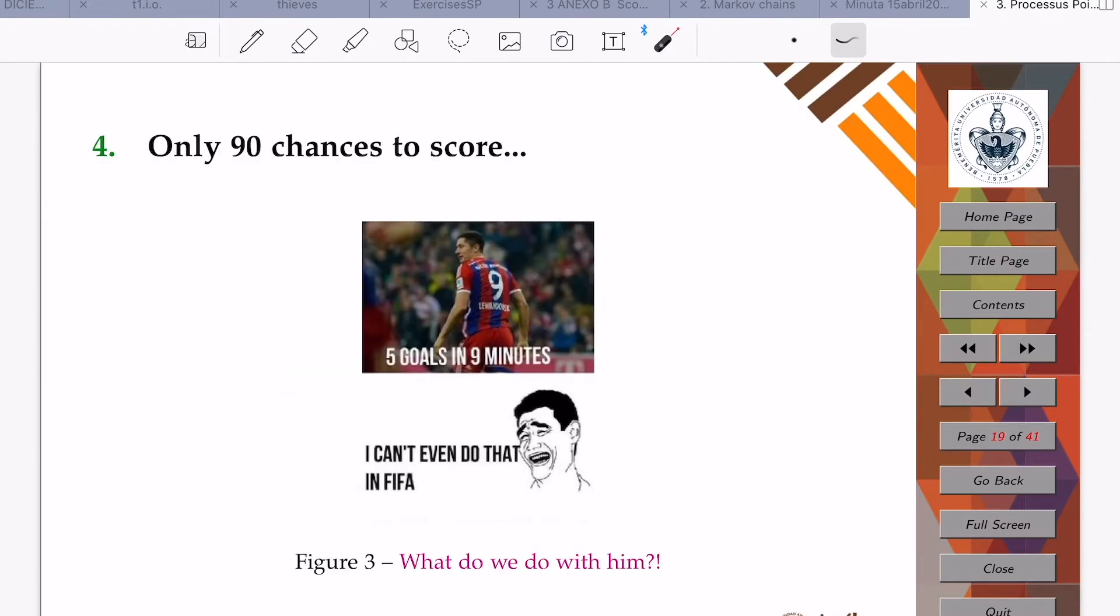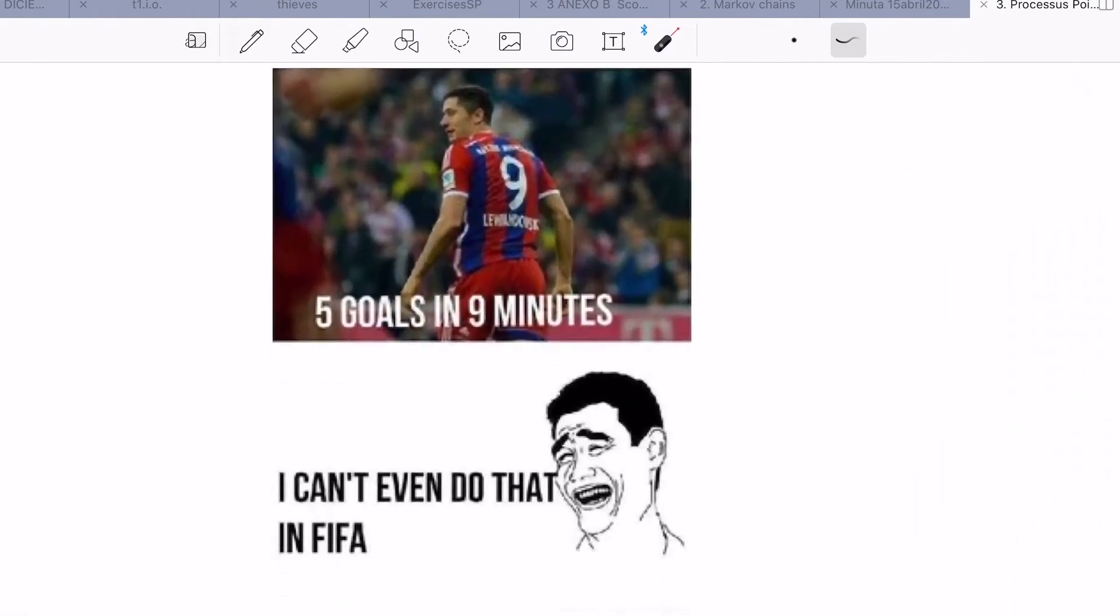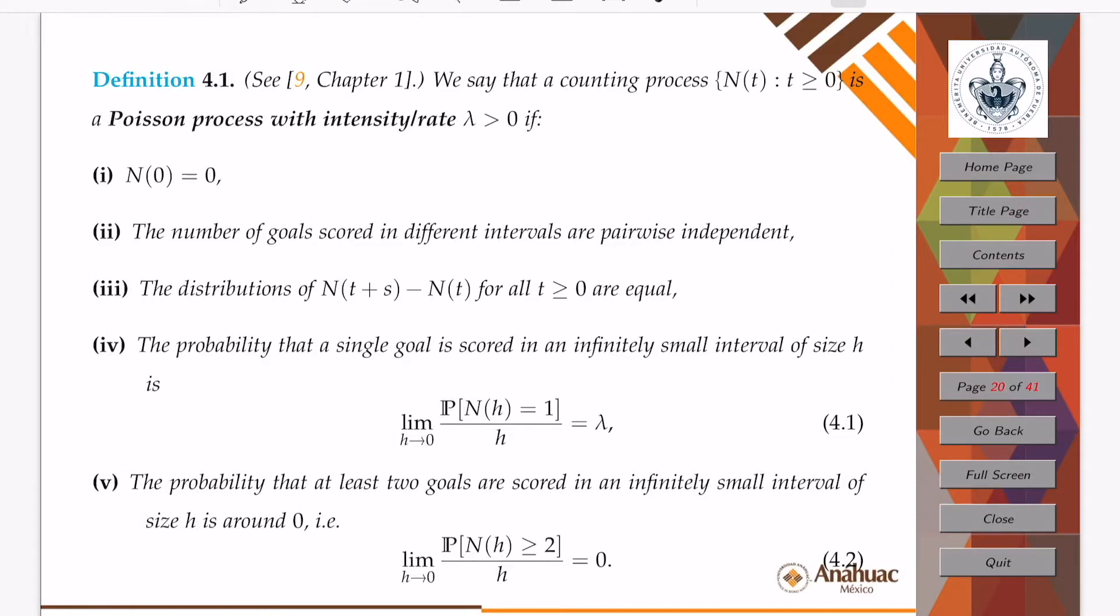When it comes to counting goals during a match, there is a big limitation that the binomial random variable has, and it is that it gives us only 90 chances to score. Robert Lewandowski is one of the reasons for which this is a limitation. What if instead of taking a binomial random variable to count goals, we use a different counting process, say, a Poisson process?